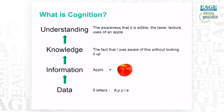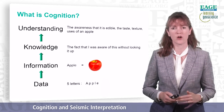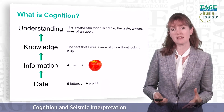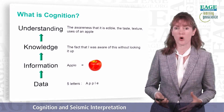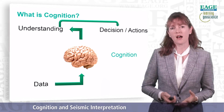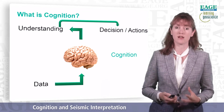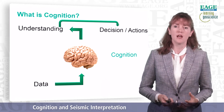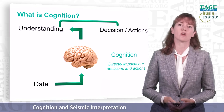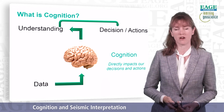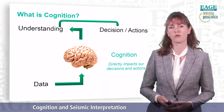So data, information, knowledge, and understanding is a gradual build-up of awareness that takes you from pure data — pure representation of something — into a full awareness of an item, an object, or feature. Understanding influences all our decisions and all our actions, because those are all based on our understanding of something. So cognition directly impacts our decisions and actions, and the greater our understanding, the better the decisions and actions that we take.